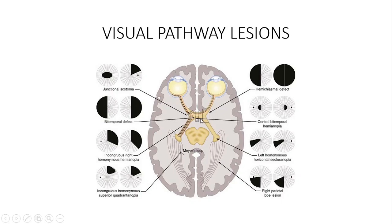When a lesion compresses the macular representation at the posterior portion of the chiasma, it affects the macula bilaterally and temporally, giving bitemporal central hemianopia — bitemporal because the temporal field is affected, and central because it is the macular fibers at the posterior edge of the chiasma that are involved.